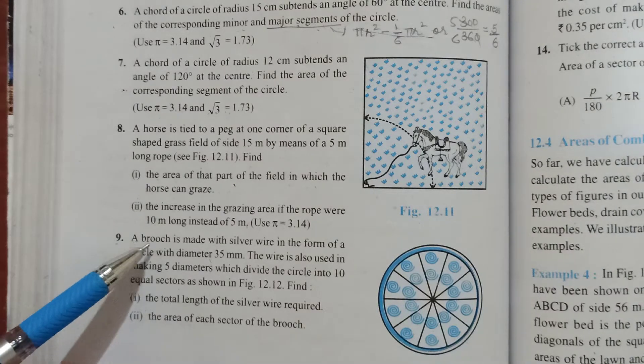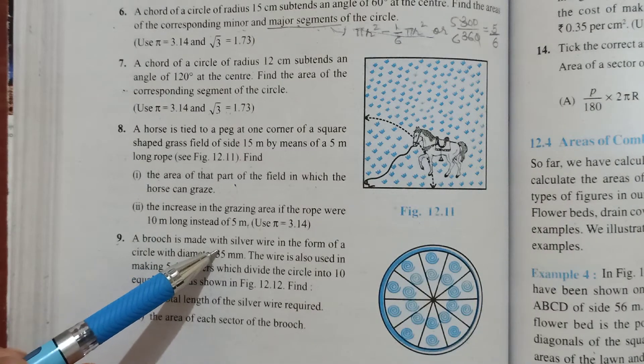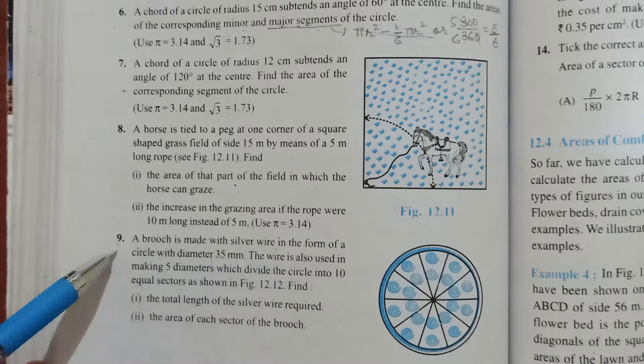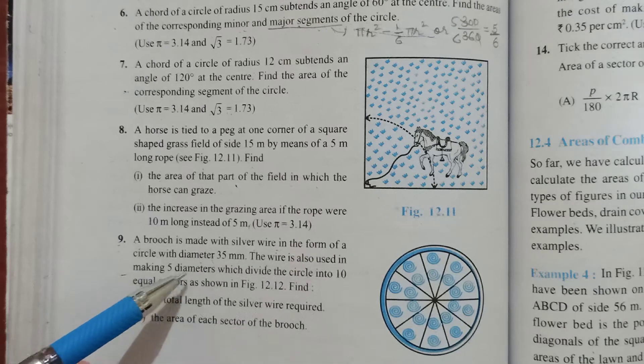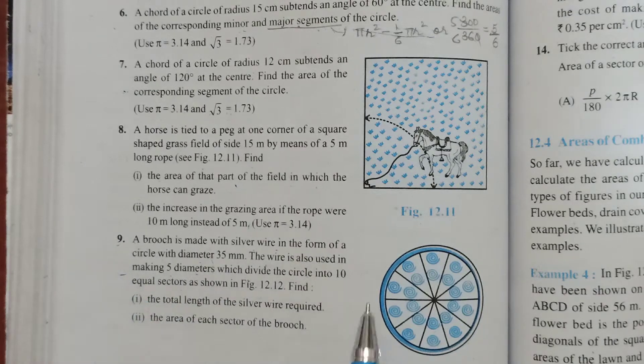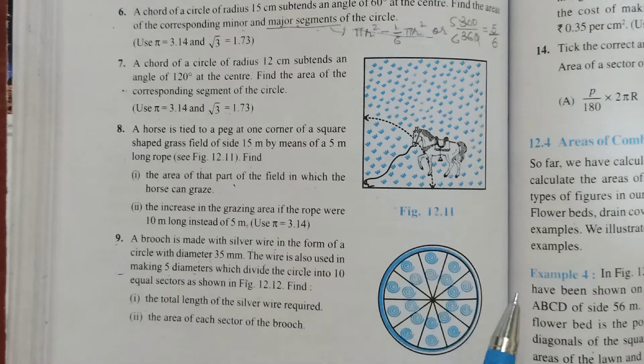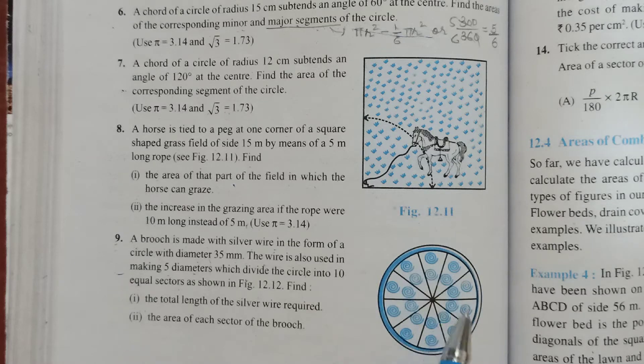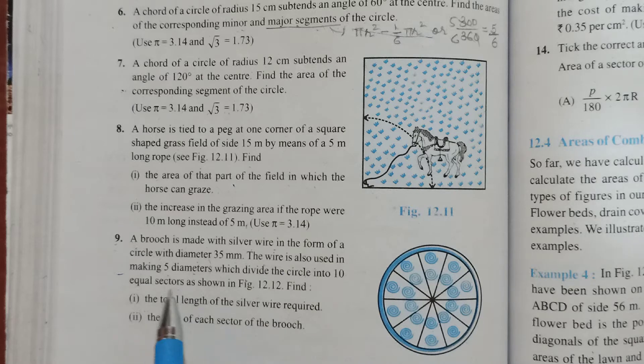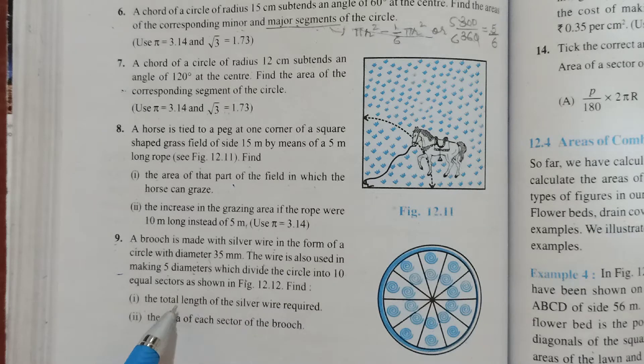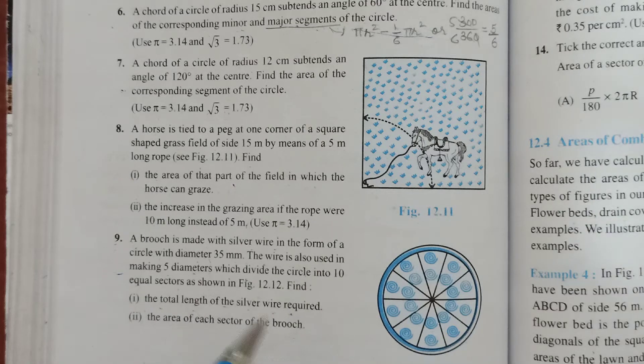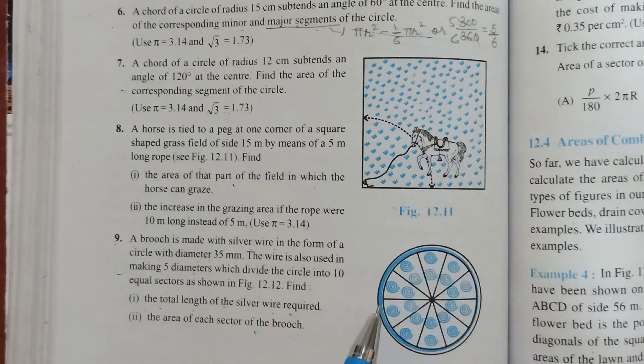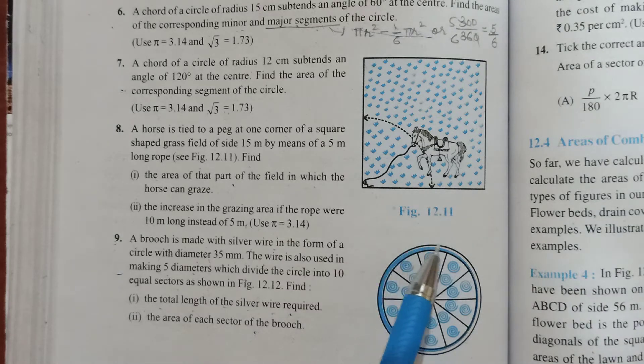Problem 9: A brooch is made with silver wire in the form of a circle with diameter 35 mm. The wire is also used for making 5 diameters which divides naturally the circle into 10 parts. They're asking you to find the total length of silver required and also area of each sector.